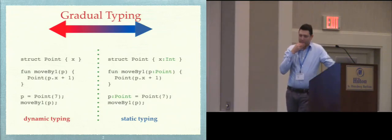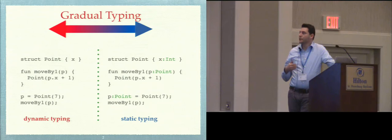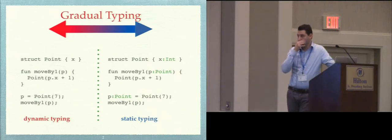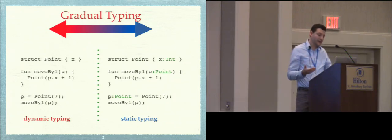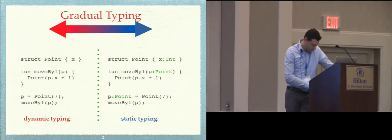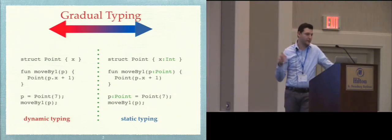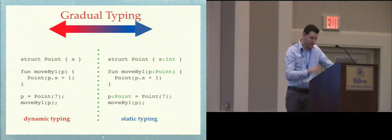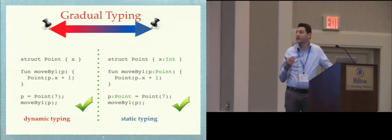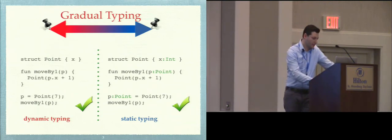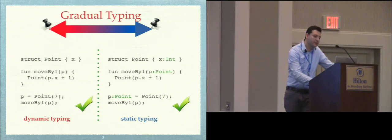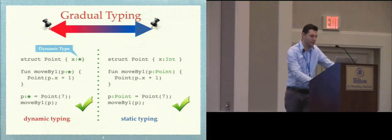So this is joint work with Jeremy Seek. Gradual Typing is an approach to integrating in the same programming language both dynamic typing and static typing, and it does so in a way encompassing the full spectrum from dynamically typed programs to statically typed programs. In the dynamically typed program, an unannotated variable has the dynamic type.